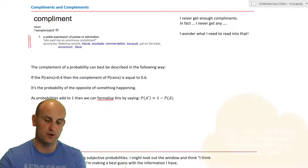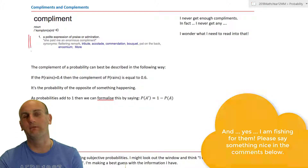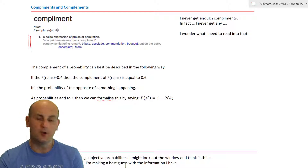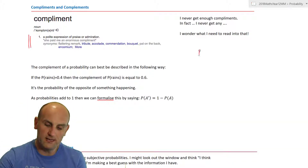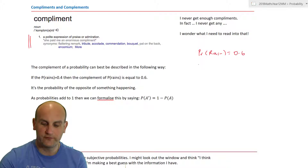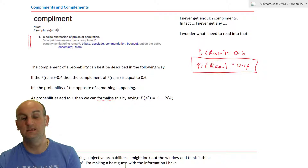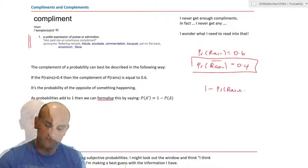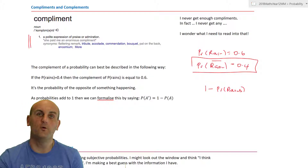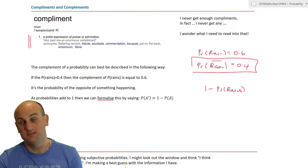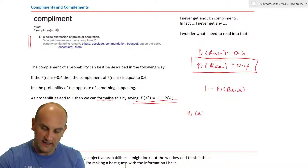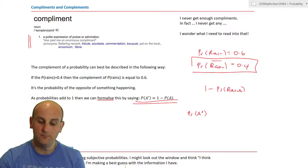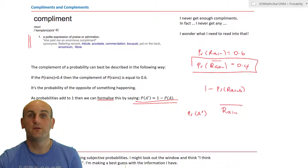Now, complements. A complement — spelled with an 'e' — is different from a compliment meaning praise. If the probability that it will rain today is 0.6, then the probability it will not rain is 0.4. The complement of an event is 1 minus the probability of that event. Remember probabilities must add up to 1. We write the complement as P(A') or put a line over the event name.